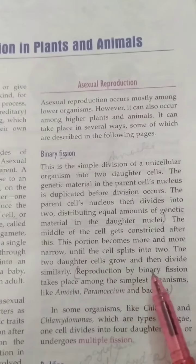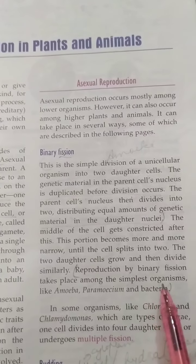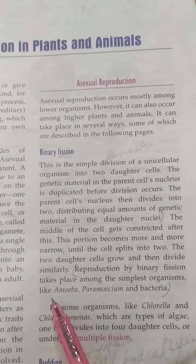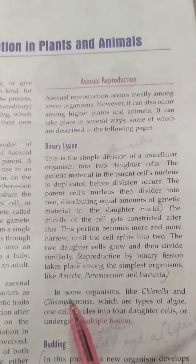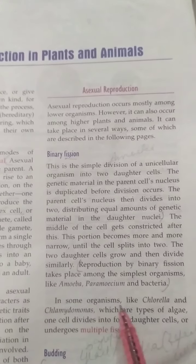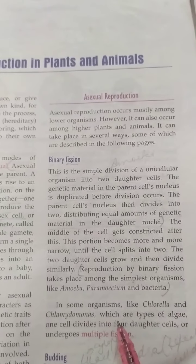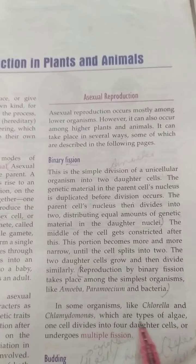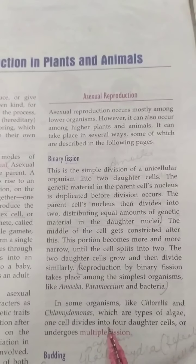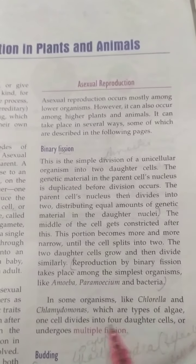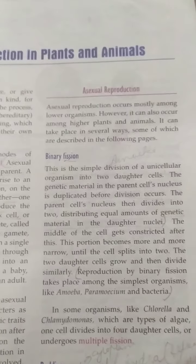Reproduction by binary fission takes place among the simplest organisms like amoeba, paramecium, and bacteria. In some organisms like Chlamydomonas, which is a type of algae, one cell divides into four daughter cells — this is known as multiple fission.